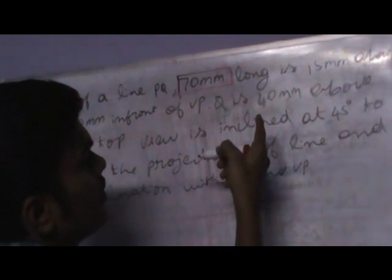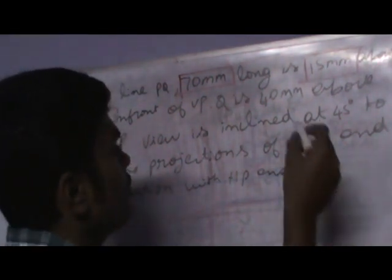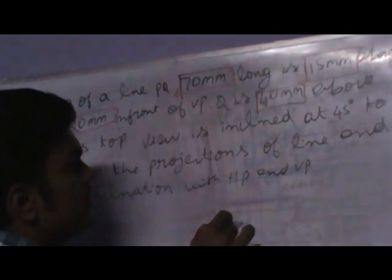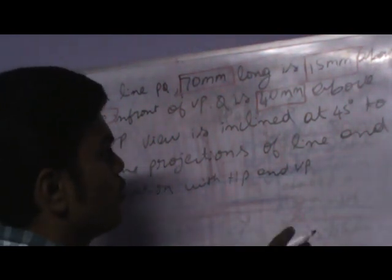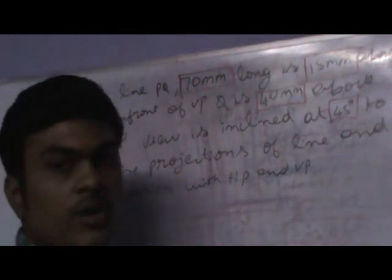The true length of the line is 70 mm. The line PQ — one end P is 15 mm above HP and 20 mm in front of VP. These are the important clues in the question. Q, the other end of the line, is 40 mm above HP. As this is a type 2 sum, the inclination of the top view of the line is given as 45 degrees to VP. We have to draw the projection of the line and find the inclination with HP and VP.